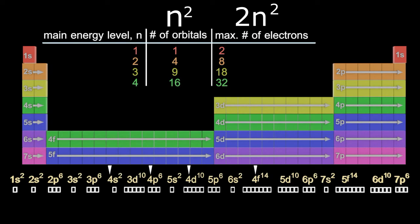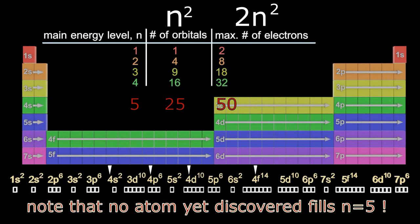So a typical question could be, in the fifth main energy level, how many orbitals are there? Well that's going to be 5 squared, it's going to be 25. And what's the maximum number of electrons? Well that's going to be 2n squared, so 2 times 5 times 5. It's going to be 50 electrons. And we're done.